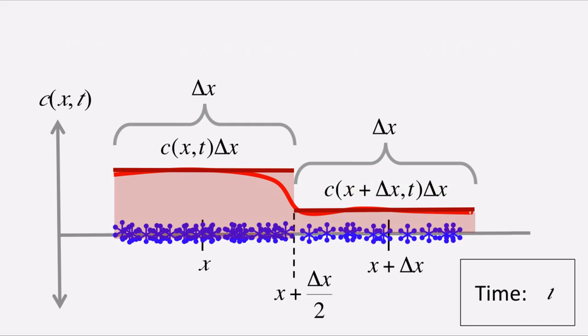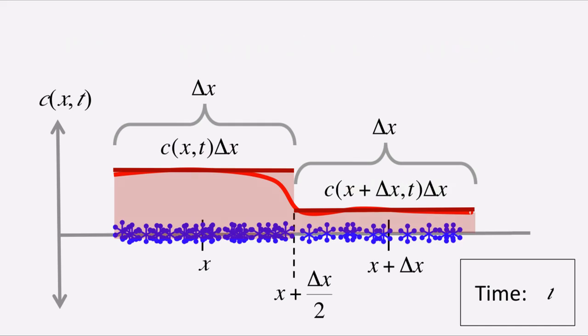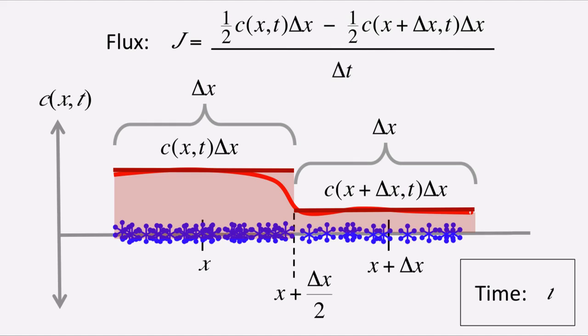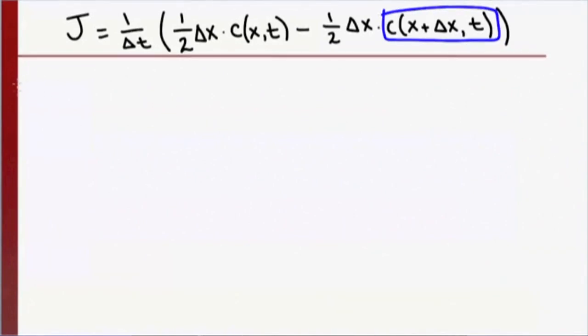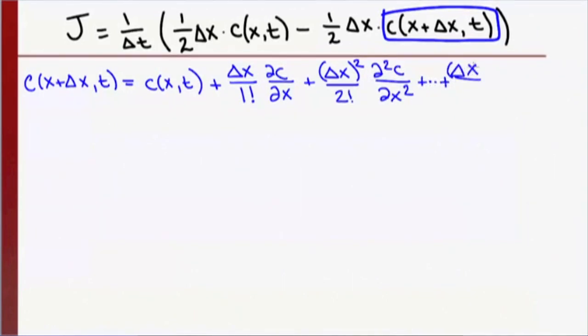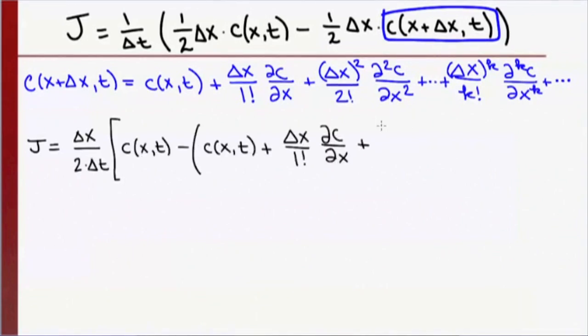We assume that any particle has 50% probability of moving one step to the left or the right. Thus, the flux through our point is given by one half times the number of particles to the left minus one half times the number of particles to the right at time t. We divide the entire expression by the time step, which is the unit of time over which we are looking at the motion of the particles. To dig a little deeper into this equation, we can take a Taylor expansion of our concentration function c of x plus delta x and t about x while holding t fixed. This gives us the following expression, which is a polynomial in delta x with coefficients given by multiples of sequentially higher partial derivatives of the concentration function c.